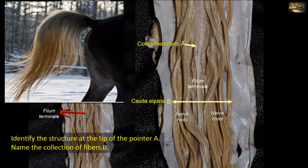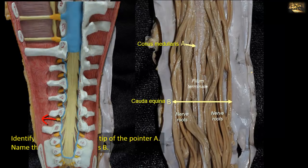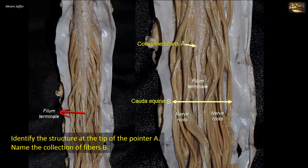These nerves exit the intervertebral canal opposite their related intervertebral foramen. For example, the L4 nerve exits the intervertebral foramen between L4 and L5; the L5 nerve exits between L5 and S1; S1 exits through the first sacral foramen, and so on. Because the spinal cord ends at the level of L1-L2, these nerves and their rootlets descend without the presence of the spinal cord, forming the cauda equina, and then leave sequentially opposite their related intervertebral foramen.